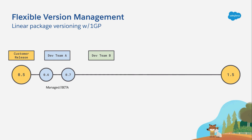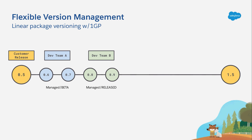Now, let's say there's a second development team, we'll call them Dev Team B, and they want to build an experimental feature, and they've already got plans to test it with a small group of pilot customers. So they build a couple of versions, only this time the lead engineer from Dev Team B unilaterally decides to upload managed released package versions instead of managed beta.